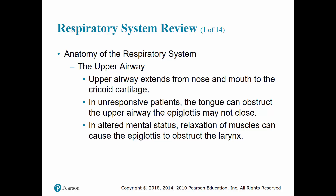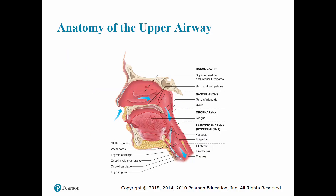The epiglottis serves as a valve that closes over the opening to the larynx while food and drink are being swallowed. The larynx, or voice box, contains the vocal cords which make up the interior portion of the larynx, commonly known as the Adam's apple, which can be felt at the front of the throat. The cricoid cartilage forms the most inferior portion of the larynx and is the only completely circular cartilaginous ring of the upper airway.